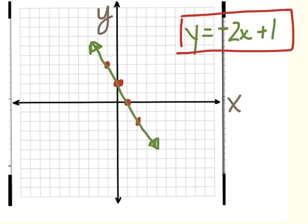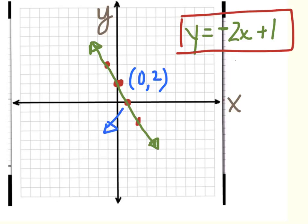The next thing you need to make sure you do is label any special points — specifically, the coordinates of the special points. Here is one special point: this one is the y-intercept, and the coordinates are 0, 2, so I'm going to label that right by the point. This coordinate down here is called the x-intercept, and the coordinates of that are 1, 0. So those are the two special points.